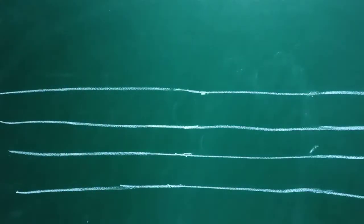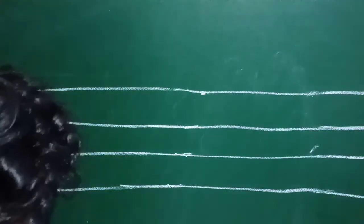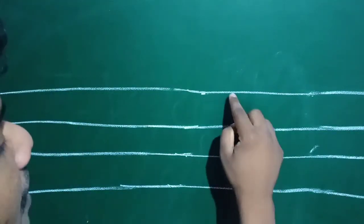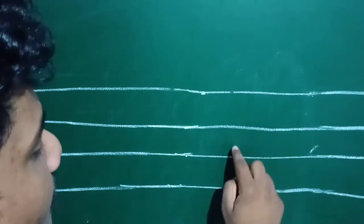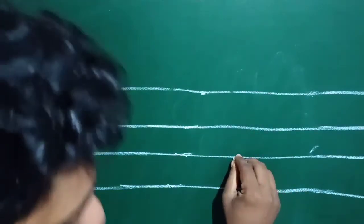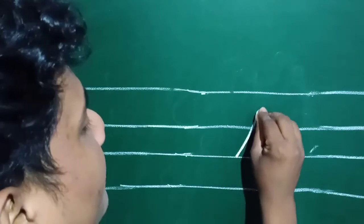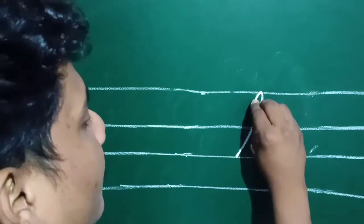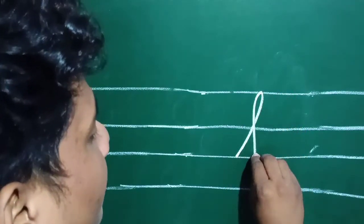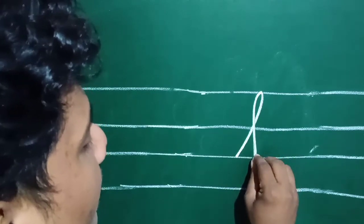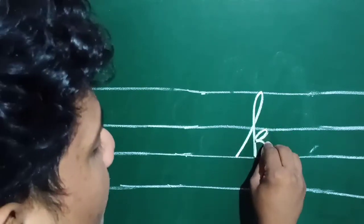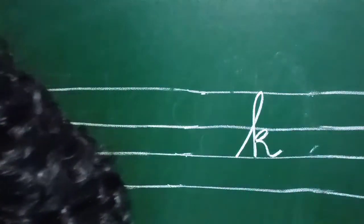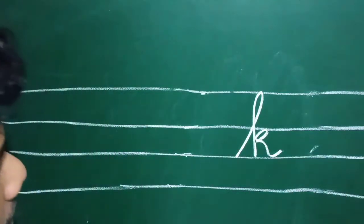How will we write small letter K? Like this — we will start from the third line. 1, 2, 3. Start from here, go like this, go like this.